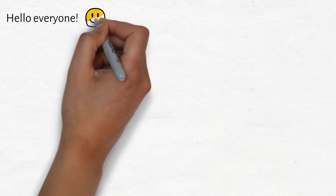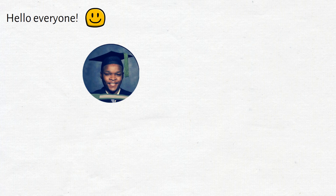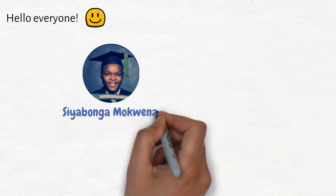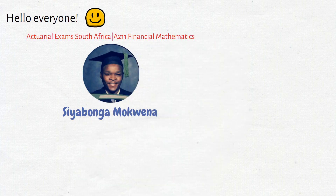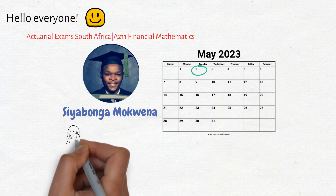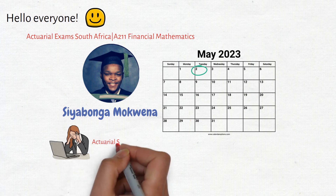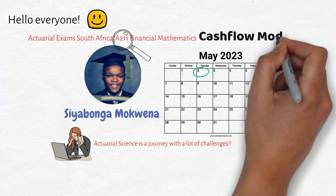Hello everyone, welcome back to my actuarial exam series. My name is Siabu Ngamukwena and I'm an actuarial science graduate currently preparing for the A211 Financial Mathematics exam, which I'll be writing in May 2023. In my last video I talked about my journey and some of the challenges that come with preparing for an actuarial exam. Today I want to dive deep into one of the topics in the A211 syllabus: cash flow models.